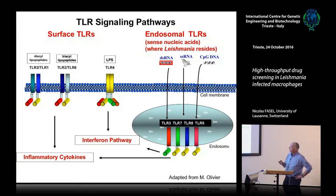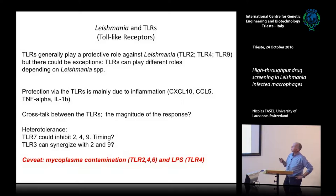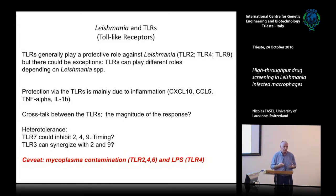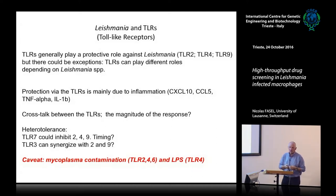That was a brief introduction. Moving to Leishmania and TLRs — most of the TLRs are protective against Leishmania. This has been shown through knockout mice, and TLR2, 4, and 9 mainly protect against leishmaniasis. The protection via TLRs is mainly due to inflammation and production of specific inflammatory chemokines and cytokines like TNF-alpha, interleukin-1-beta, and so on. There could be cross-talk between the TLRs — you can activate TLR2 and TLR9, TLR2 and TLR3, which complicates the picture.